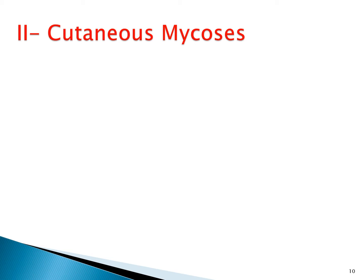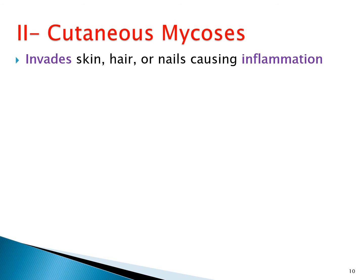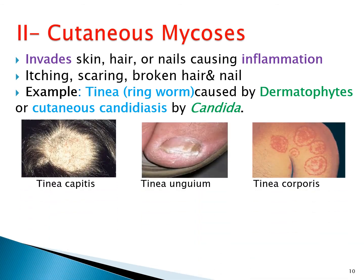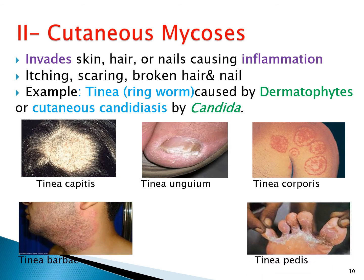Another type is cutaneous mycosis. Here the fungus invades the skin, hair, or nails causing inflammation, itching, scarring, scales, broken hair, or nail damage. Examples include tinea (ringworm), caused by dermatophytes — filamentous fungi — or cutaneous candidiasis, caused by Candida. Tinea is named by site: tinea capitis (scalp/hair), tinea unguium (nails), tinea corporis (body), tinea barbae (beard), and tinea pedis (interdigital spaces).